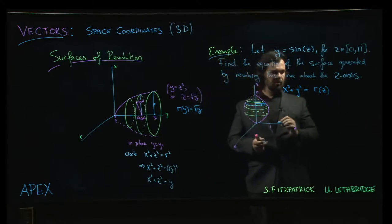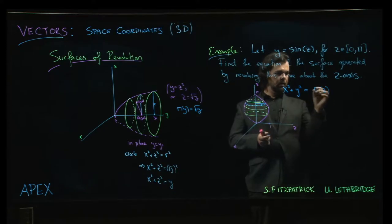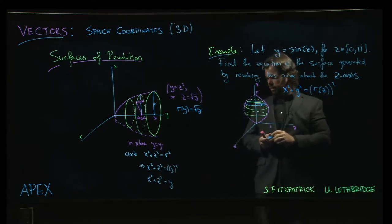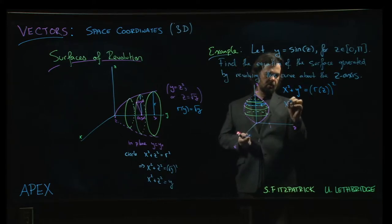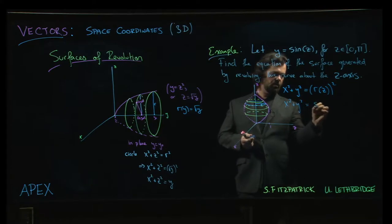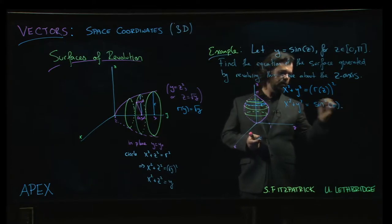Y happens to be, for this curve, sine of z, and we should be squaring that. So what we get in this case is that x squared plus y squared equals sine squared z.